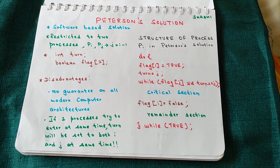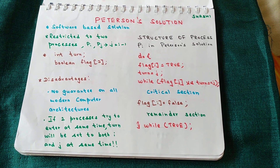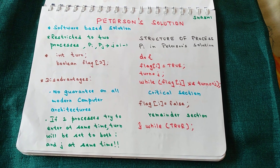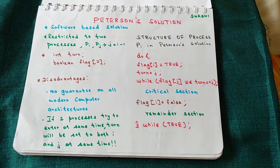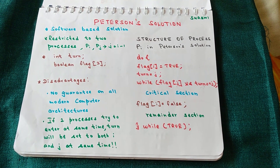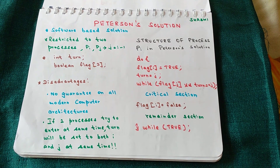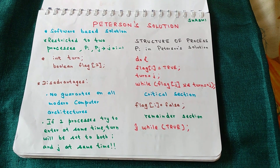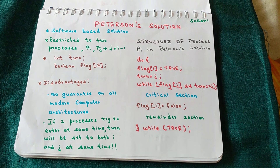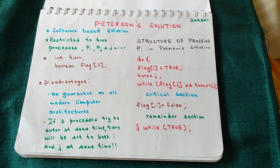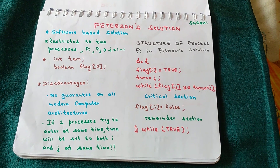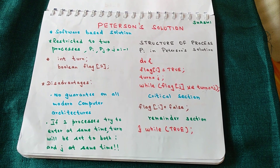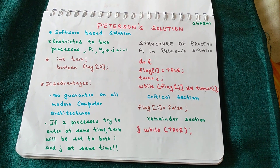Welcome back to another video on operating systems. In this video we will see Peterson's solution in operating systems. We already covered what a critical section is and what the critical section problem is. Critical section is that portion of the program code where the program tries to manipulate shared data. The critical section problem is to design a protocol for cooperating processes so that when one process is in the critical section, no other process is allowed to execute in it. Two important things about Peterson's solution: it is a software-based solution, and it is restricted to two processes.